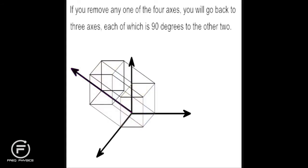If you remove any one of the four axes, you will go back to three axes, each of which is 90 degrees to the other two.